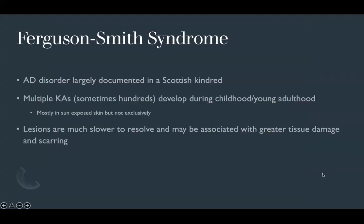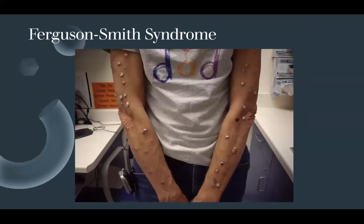Ferguson-Smith syndrome is an autosomal dominant syndrome largely documented in Scottish populations where patients develop multiple keratoacanthomas — sometimes up to hundreds — beginning in early childhood and young adulthood, mostly on sun-exposed skin but not exclusively. The lesions are much slower to resolve and may cause greater tissue damage and scarring. Diffuse keratoacanthomas can be seen on both arms bilaterally.